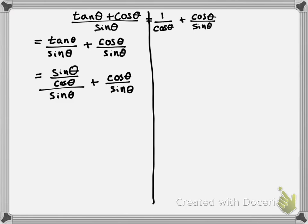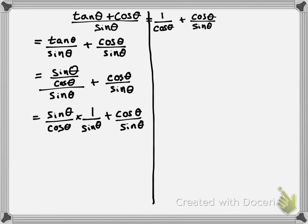Now everything's in terms of sine and cosine, and it looks like I can simplify. That first term — sine of theta over cosine of theta divided by sine of theta — instead of dividing by sine of theta, I'm going to multiply by the reciprocal, which is 1 divided by sine of theta. Then I have plus cosine of theta divided by sine of theta. In that first term, I have a sine of theta on the top of a fraction and a sine of theta on the bottom, and those two fractions are being multiplied — so I can cancel out sine of theta. That leaves us with 1 over cosine of theta plus cosine of theta over sine of theta.